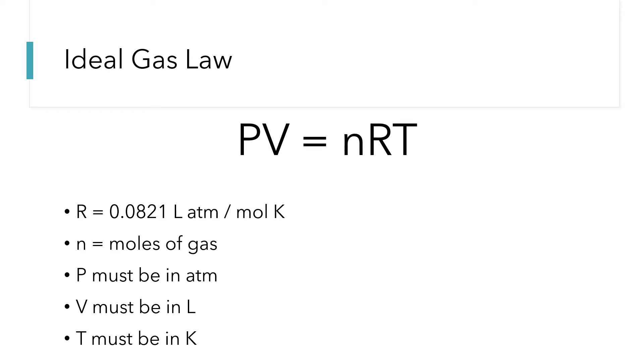There's a new variable or a new constant in this equation and that is known as the ideal gas law constant R. R is 0.0821 and then it has really strange units: liters times atmospheres divided by moles and divided by kelvins.